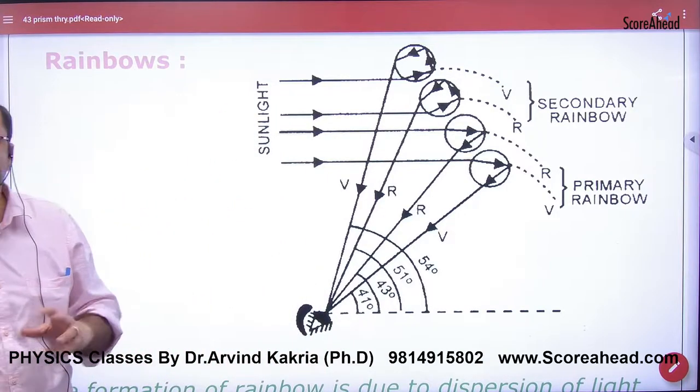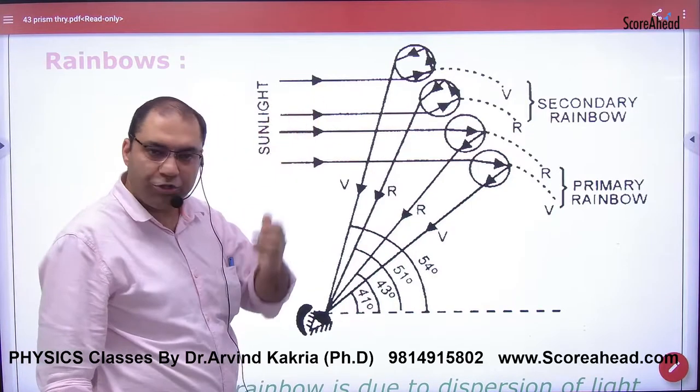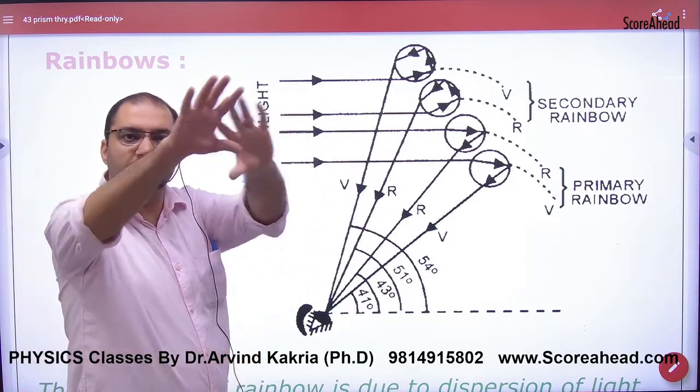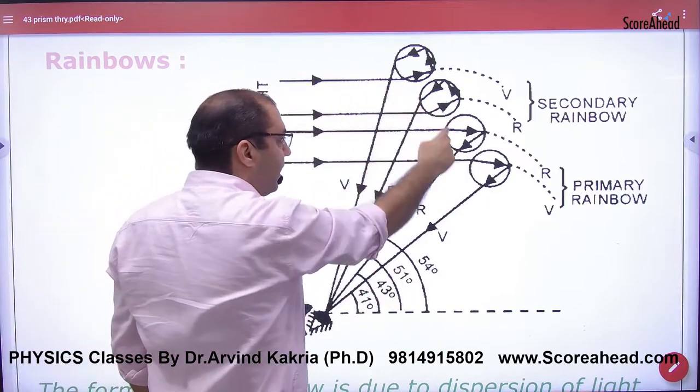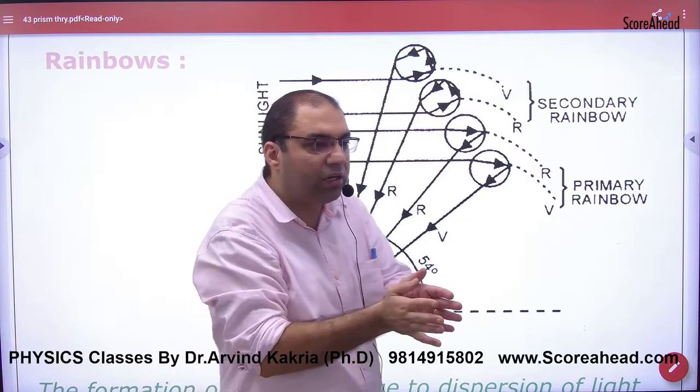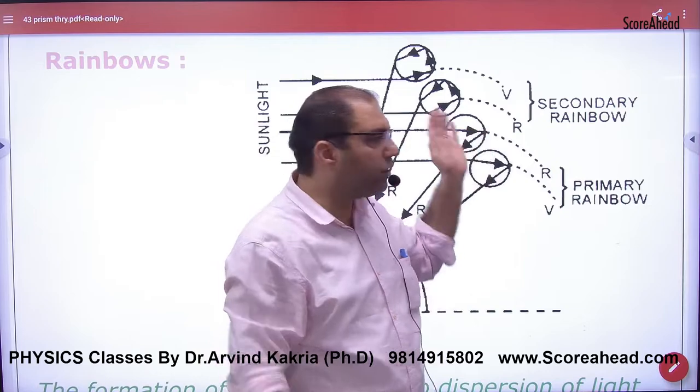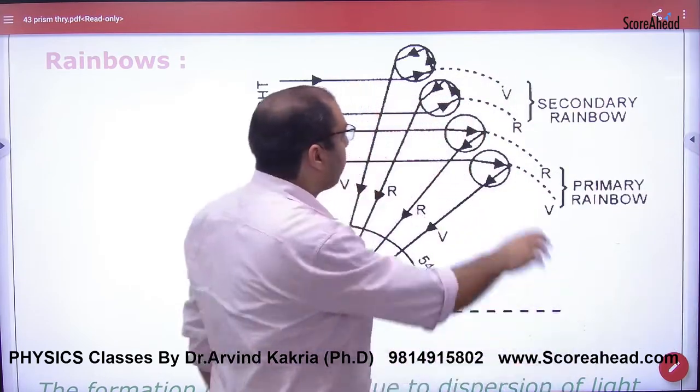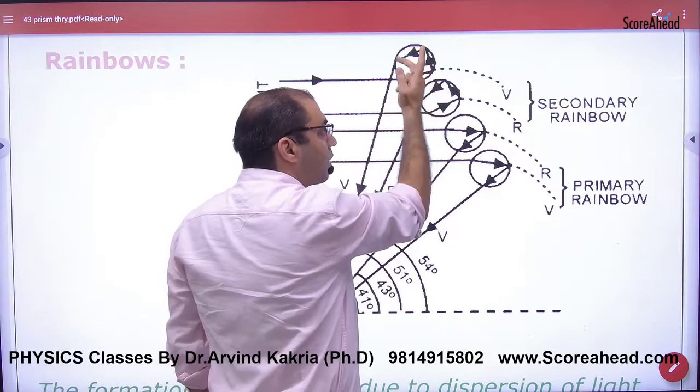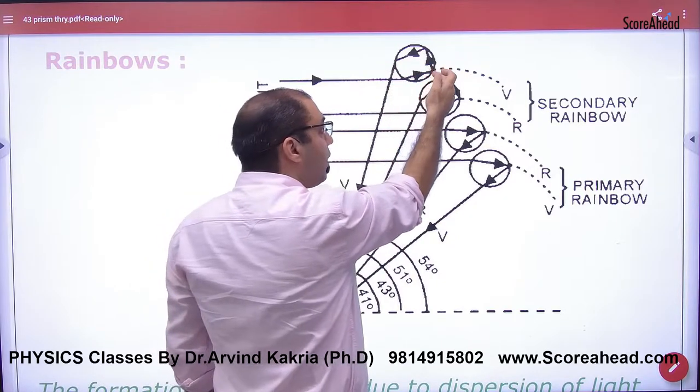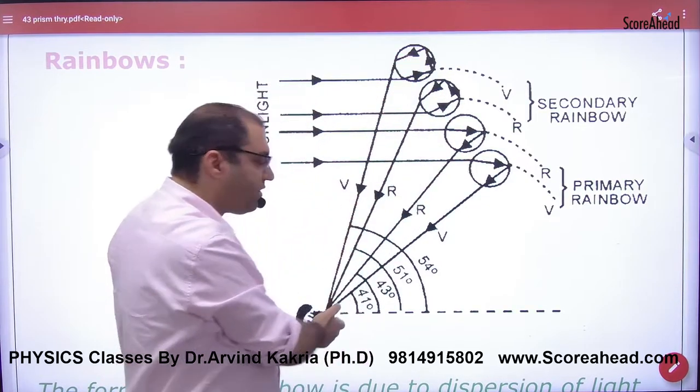Look carefully - sunlight is coming, rain has just finished, water droplets are still in the air as moisture. Light enters the water droplets and splits into seven colors - this is the phenomenon of dispersion of light. The seven colors are formed, but they should have gone straight through. But what happened is light entered the water droplets and Total Internal Reflection occurred.